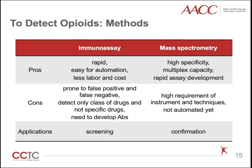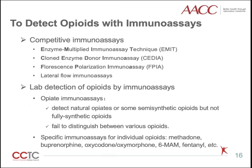Mass spectrometry methods have high sensitivity, high specificity, and multiplex capacity. Due to the high demands on instrument, technique, and cost, mass spec methods are usually used for opiate confirmation. Since opiates are small molecules, competitive immunoassays are applied for opiate detection, including enzyme-multiplied immunoassay technique (EMIT), cloned enzyme donor immunoassay (CEDIA), fluorescent polarization immunoassay, and lateral flow immunoassays.